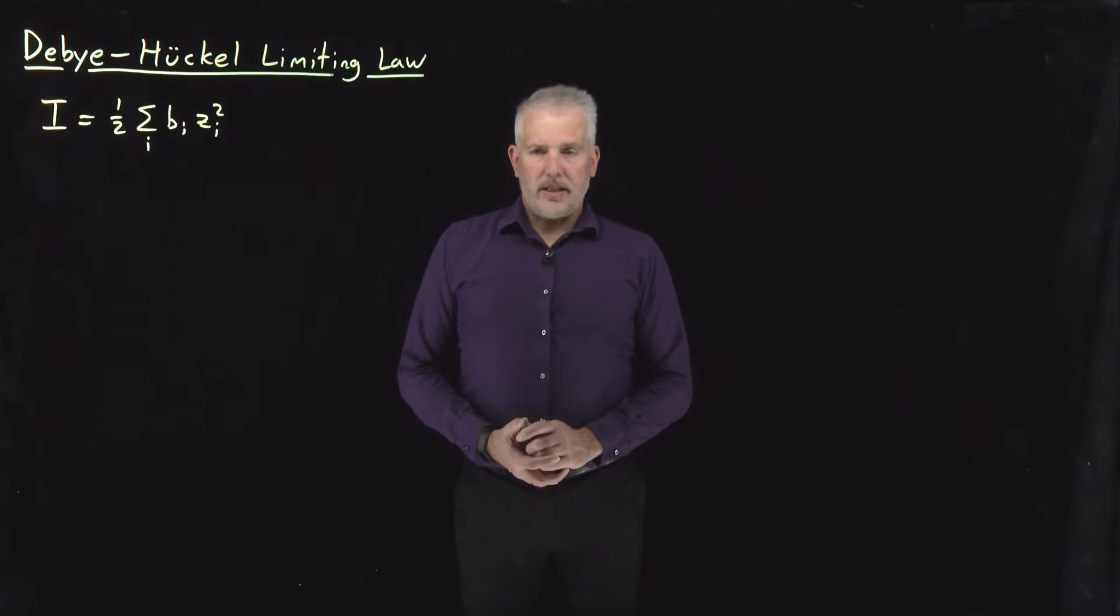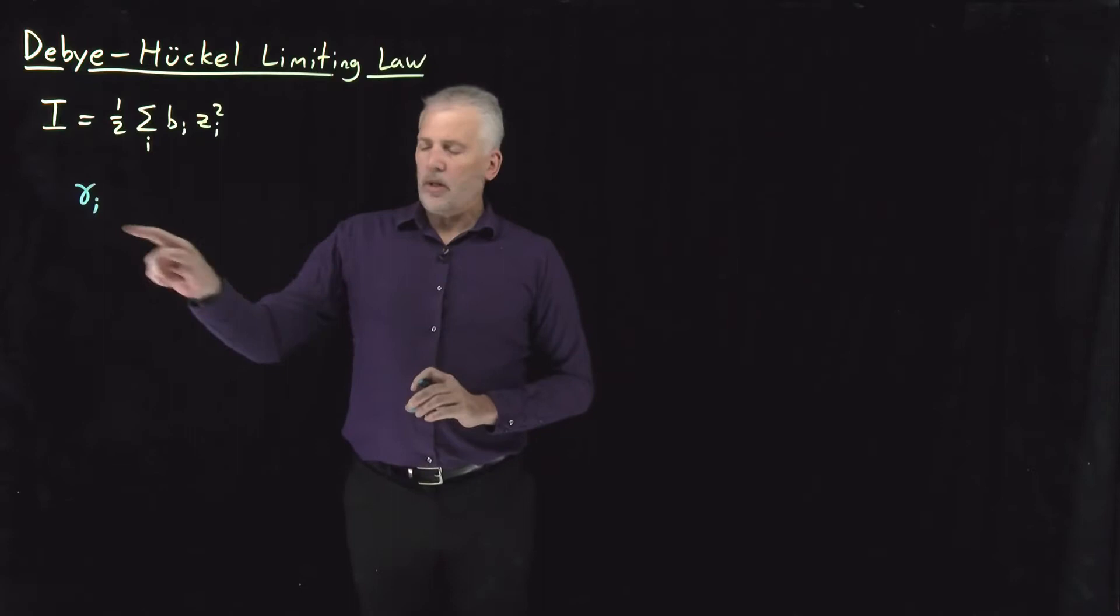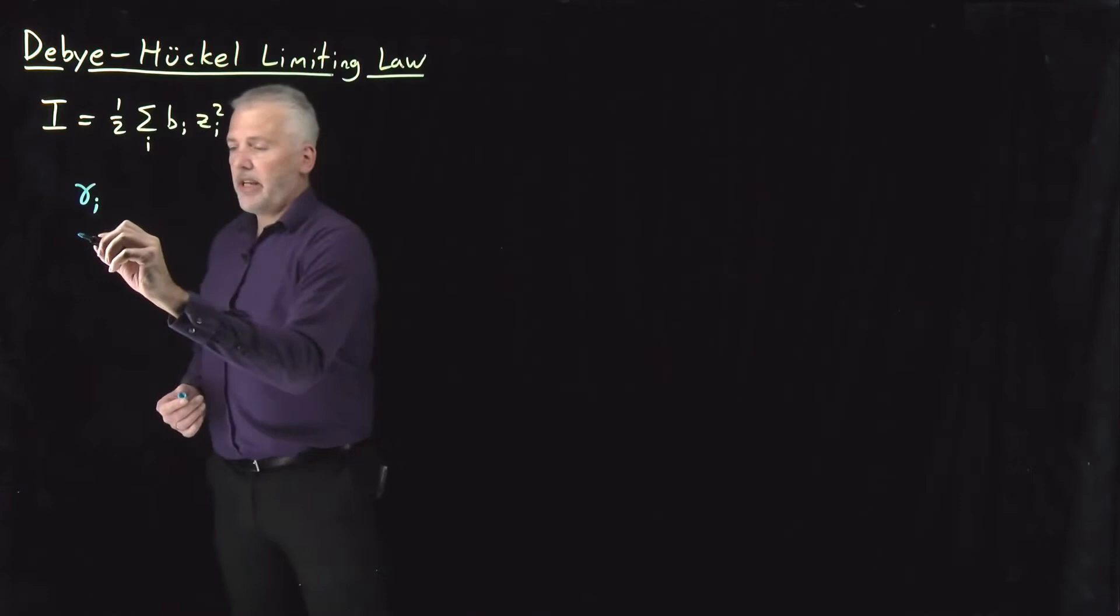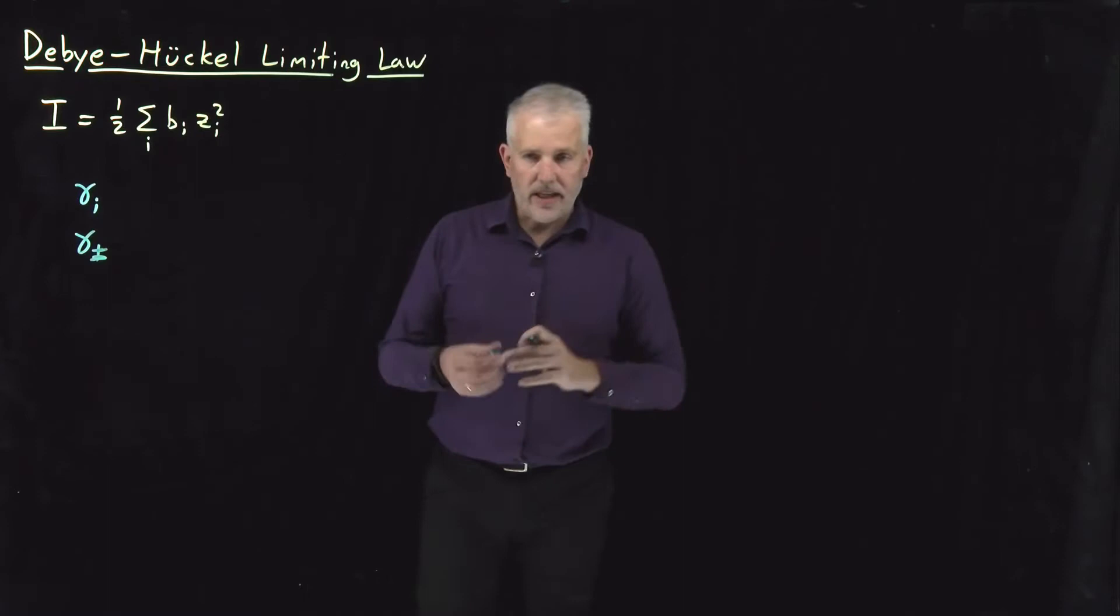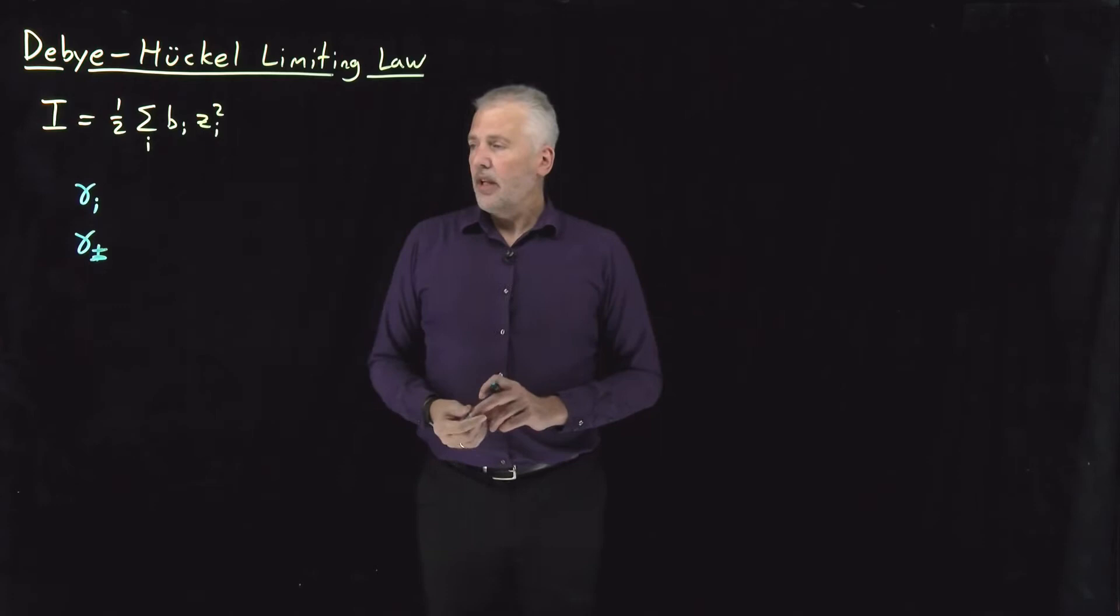All right, so our next step is to get a little more quantitative about predicting the ideality or non-ideality of electrolytic solutes in solutions and how we can use the ionic strength to do that. If we're talking about the ideality or non-ideality of a solute, the quantity we're interested in is the activity coefficient, perhaps the mean ionic activity coefficient for the entire solution, or we can think of the activity coefficient for individual ions, maybe a sodium ion or calcium ion.